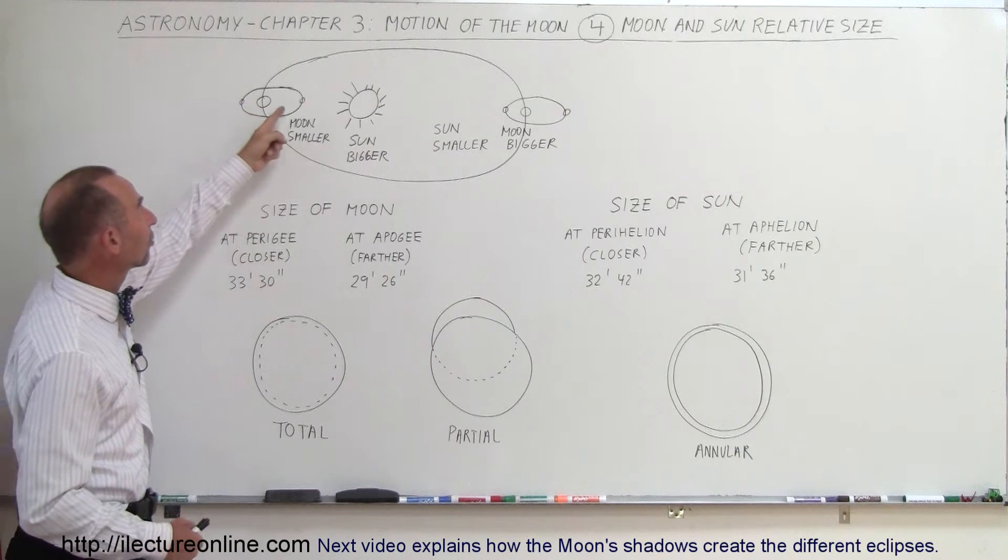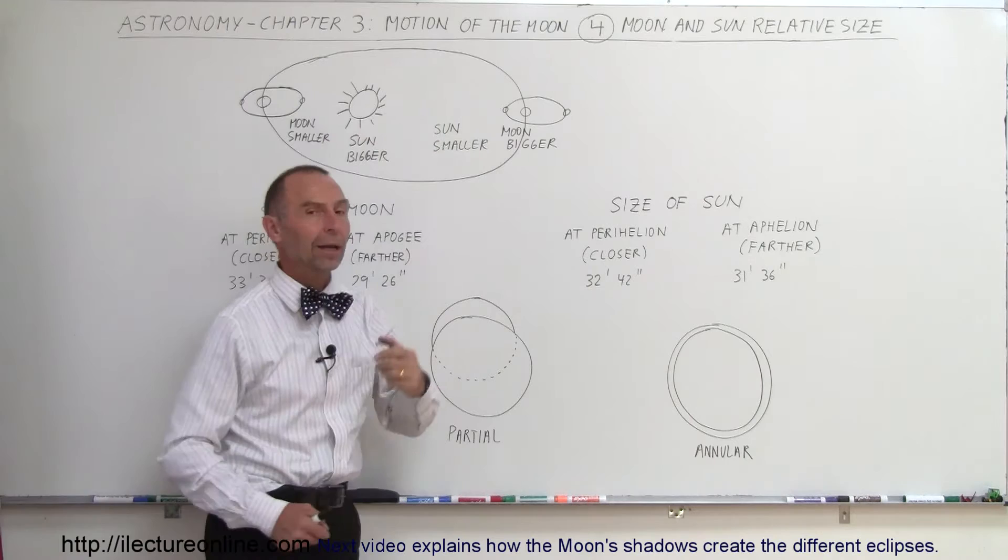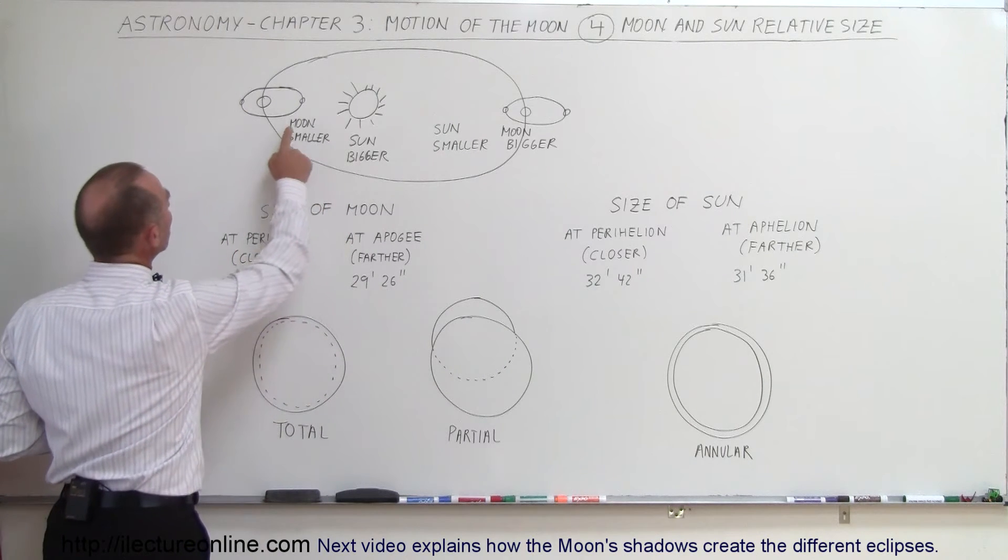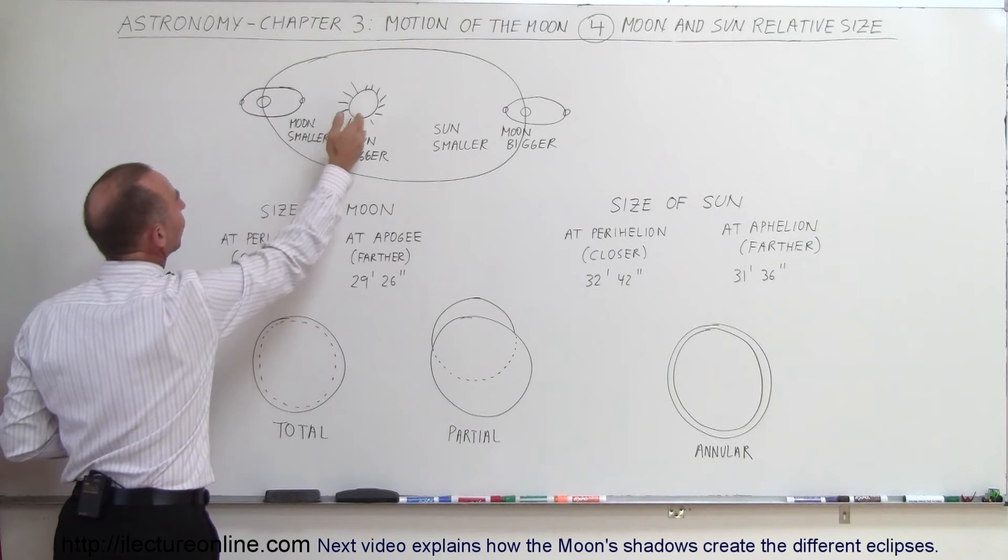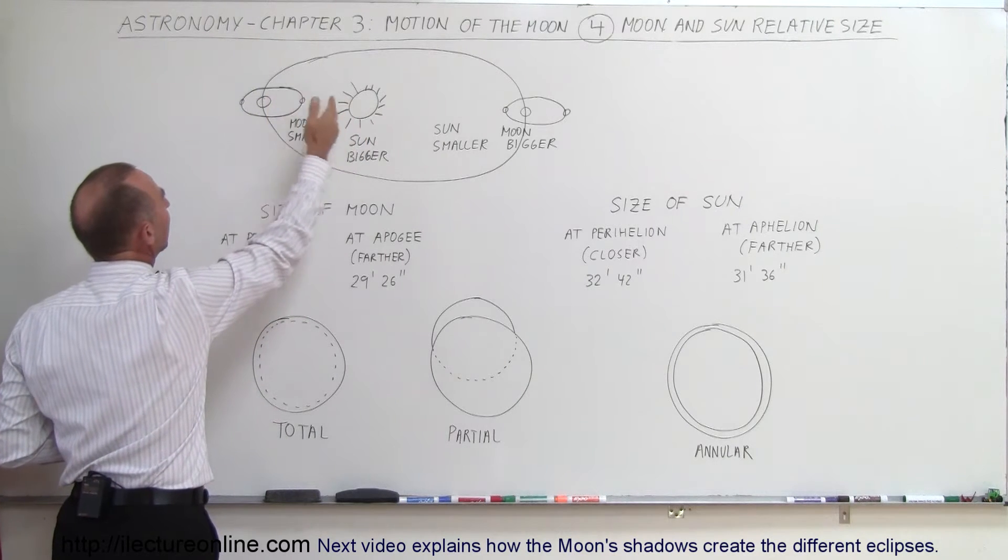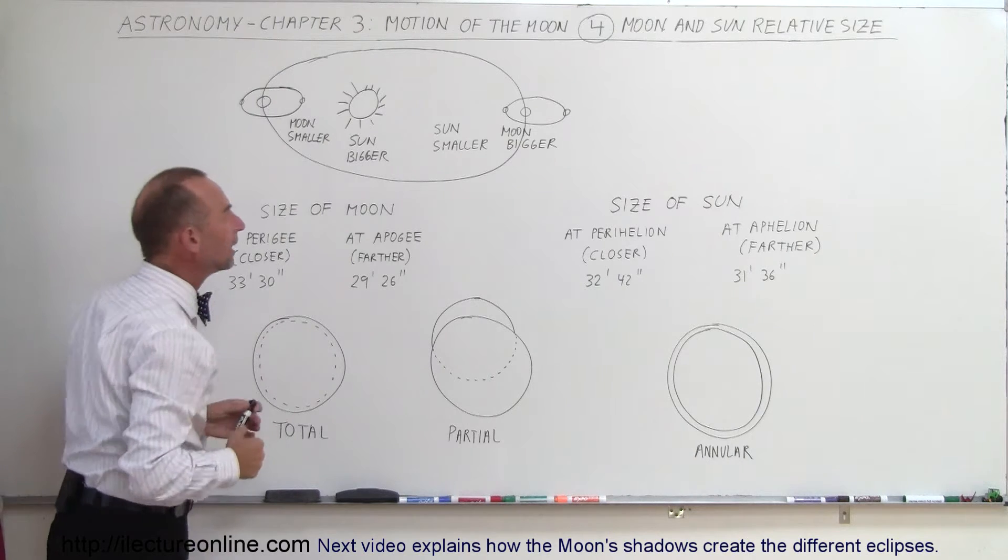Same with the Earth, sometimes it's closer to the Sun, sometimes it's farther away. So in the extreme case here, where the Moon appears smaller because it's farther away from the Earth in its orbit and the Sun appears bigger because it is closer to the Sun than the average,